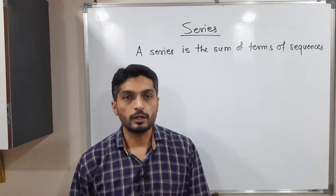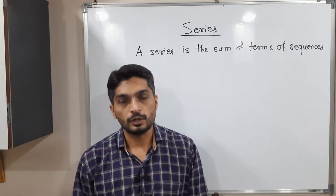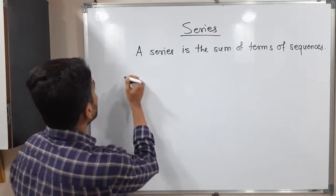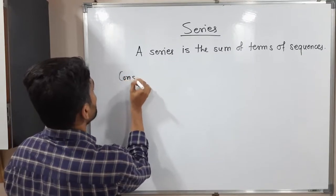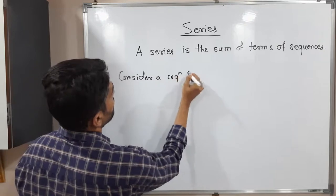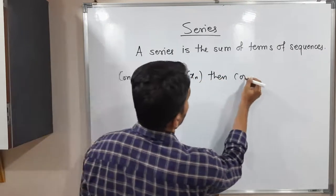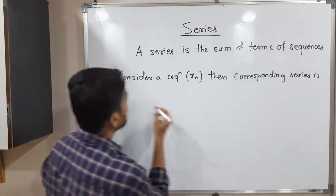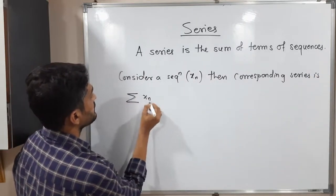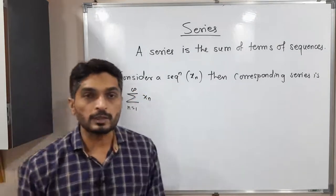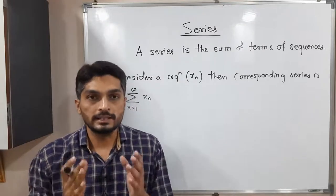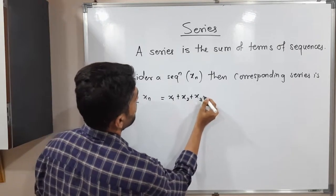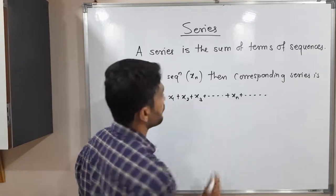Let us discuss this concept: series. We are familiar with the sequence of real numbers. When we take the sum of all terms of a sequence, we get a series. Consider a sequence xn — the corresponding series is summation xn, n running from 1 to infinity. Expanding this summation, we get x1 plus x2 plus x3 plus and so on, xn plus and so on. We call it a series.